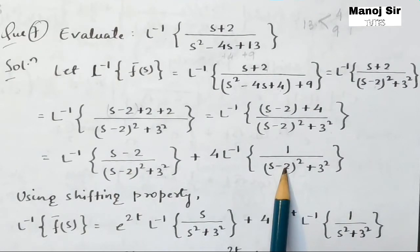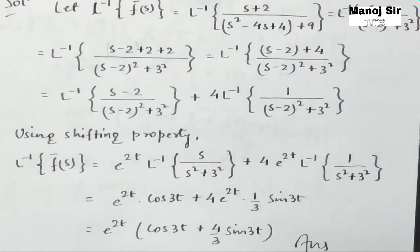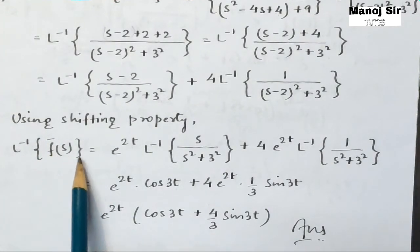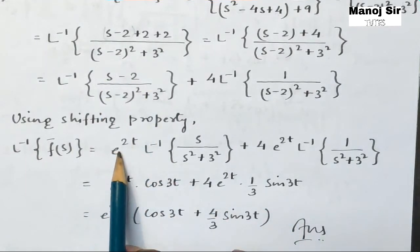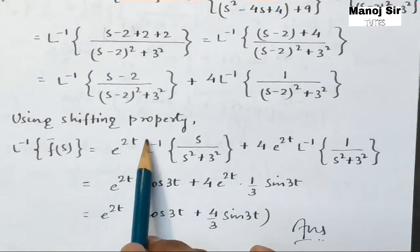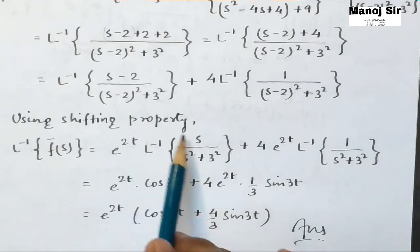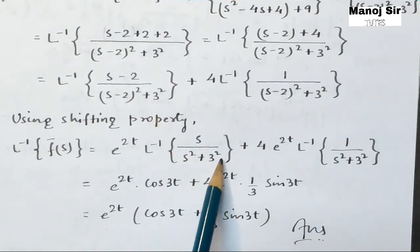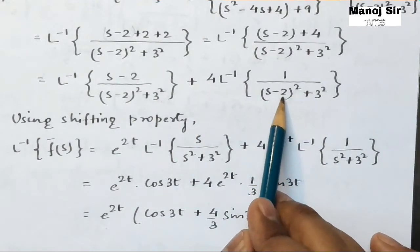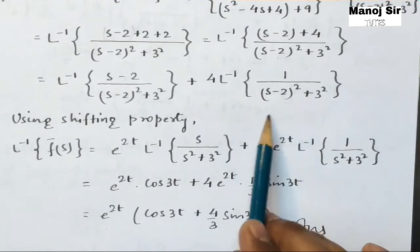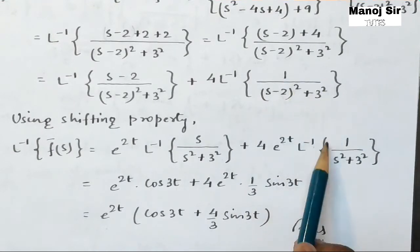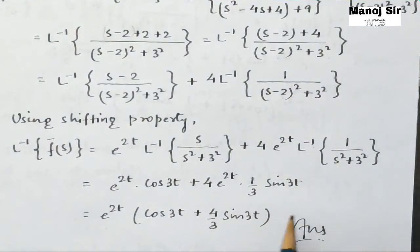Here the value of a is 2, so using the shifting property: the inverse Laplace transform of f̄(s) equals e^(2t) times the inverse Laplace transform of s upon (s² + 3²), plus 4 · e^(2t) times the inverse Laplace transform of 1 upon (s² + 3²). The shifting property has been applied to both terms.